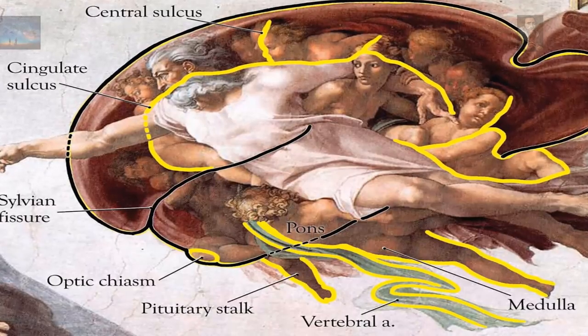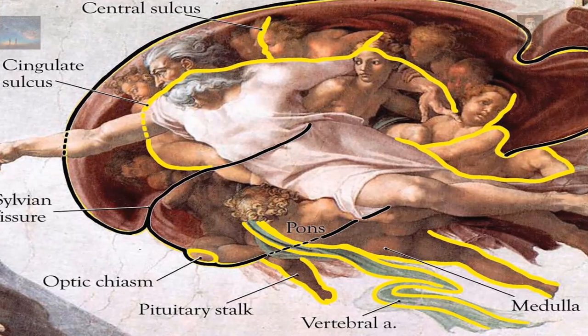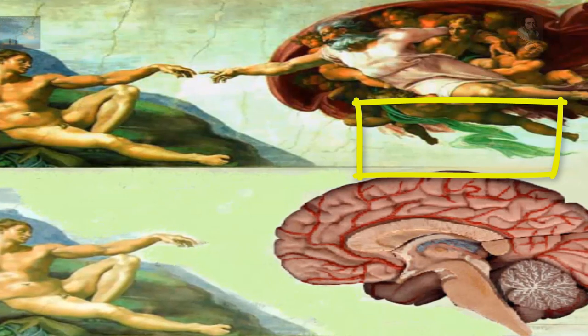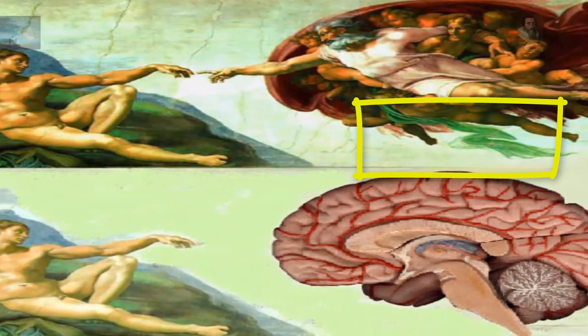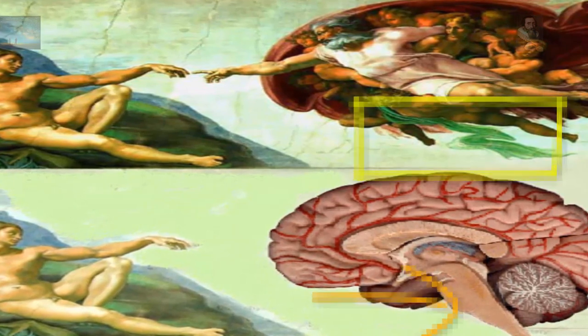Even complex components within the brain such as the cerebellum, optic chiasm, and pituitary gland can all be found in the picture. As far as the sassy green sash running down the man's spinal column who is holding God up, it follows the path of the vertebral artery perfectly.